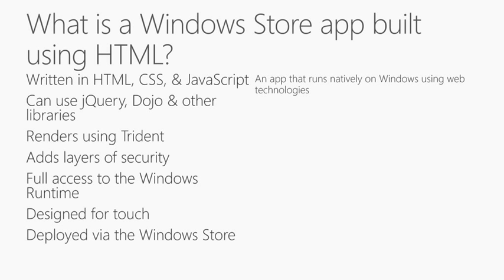There are only about three other players in the world that build a platform where HTML and JavaScript is native to the platform — Firefox OS does it, we do it, and WebOS used to do it. We built the JavaScript framework so you're able to do anything in our platform with JavaScript that you're able to do with other technologies. It's a first-class citizen on our platform, just as valid as building an application in C# and XAML.